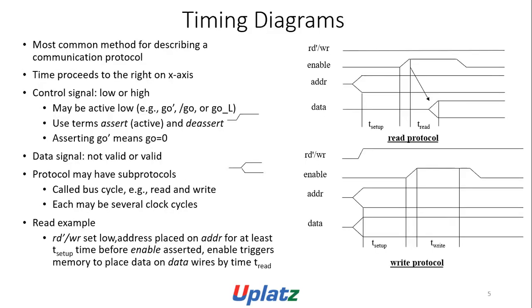Timing diagrams are the most common method for describing a communication protocol, with time periods progressing to the right on the x-axis. A control signal is low or high and may be active-low (e.g., GO-bar). Use the terms assert, active, and de-assert. Asserting GO-bar means GO equals zero. A data signal is either not valid or valid. A protocol may have sub-protocols called bus cycles: read or write.